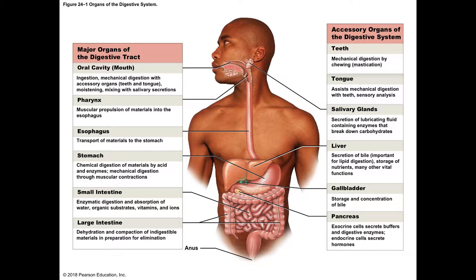The material that comes in through the mouth has to be mechanically broken down into smaller pieces, and then chemically broken down into small enough chemicals to get absorbed into the body. It has to get absorbed through the wall of that muscular tube, then through the interstitial space, then through the blood vessel lining to get into the blood. Once it's in your blood, we say it's absorbed.